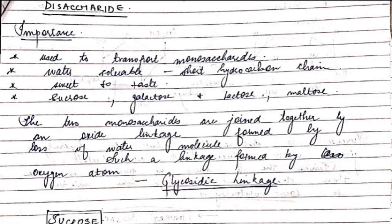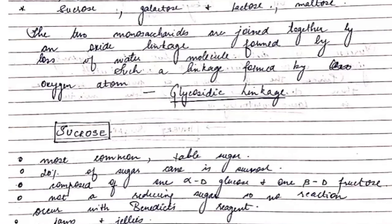Disaccharides are water soluble and sweet to taste. Examples are sucrose, galactose, lactose, and maltose. Very importantly, if two monosaccharides are joined together by an oxide linkage formed by loss of a water molecule, such a linkage is called a glycosidic linkage.